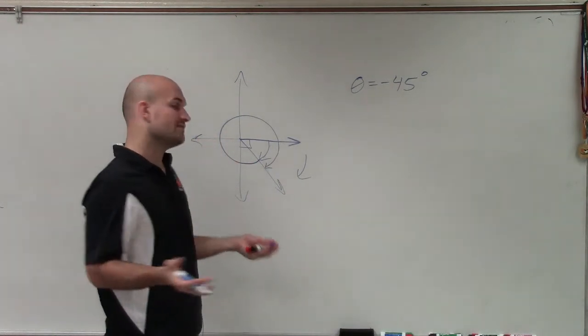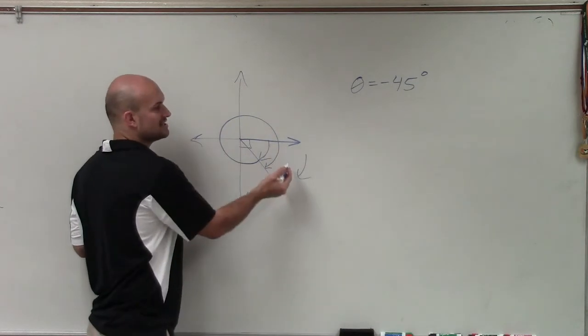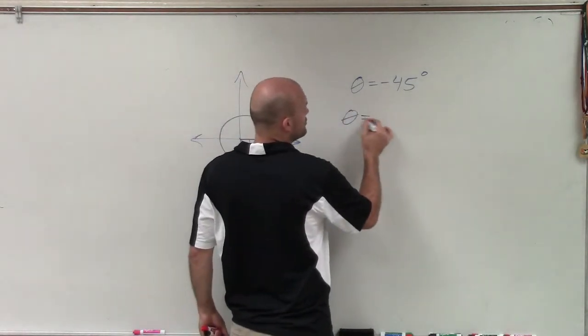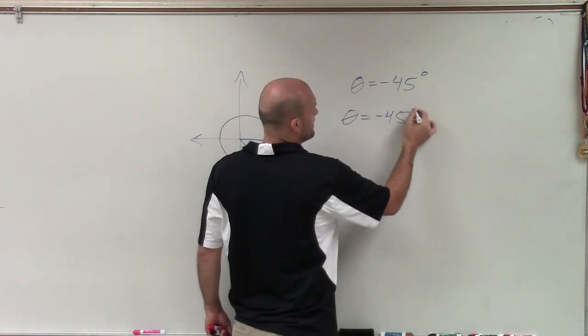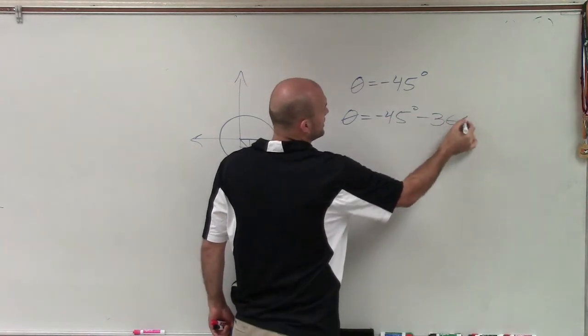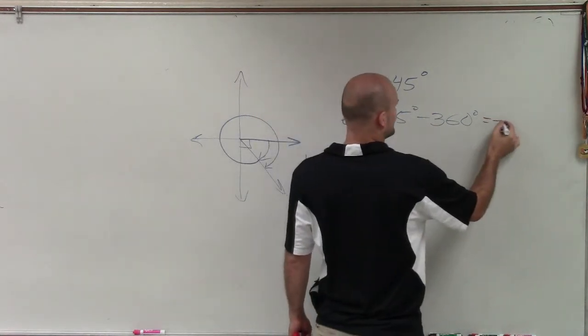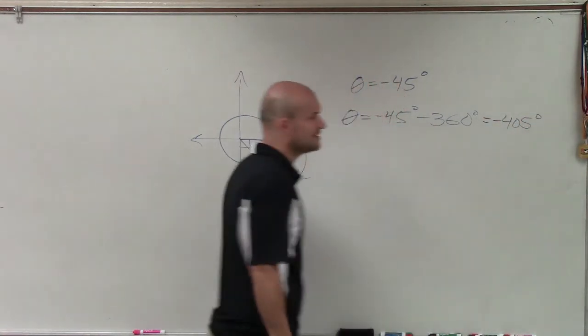So one revolution of a circle is 360 degrees. And since I'm going in the negative direction, to find the smallest coterminal angle, it'd be negative 45 degrees minus 360 degrees. So that is going to be negative 405 degrees.